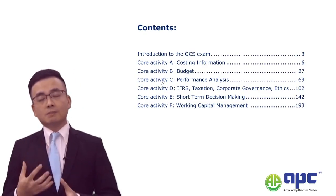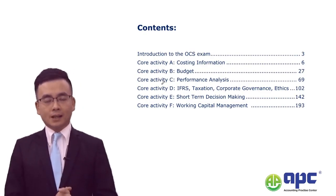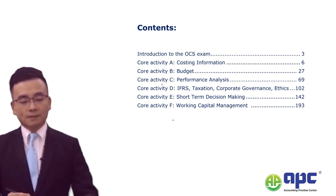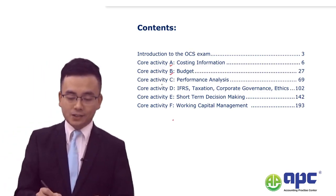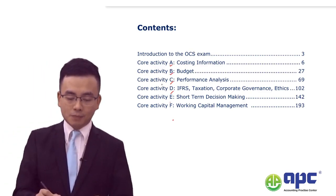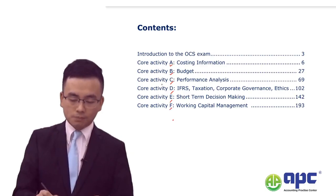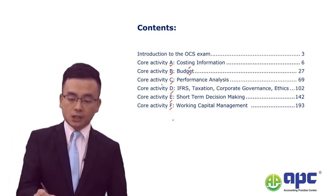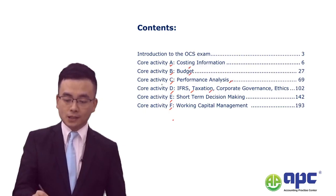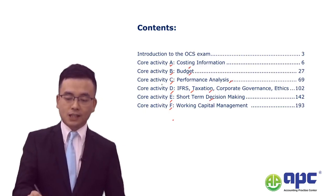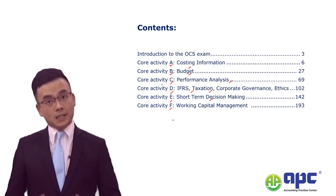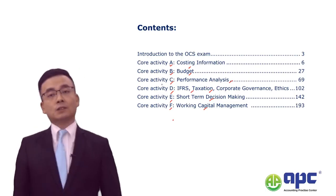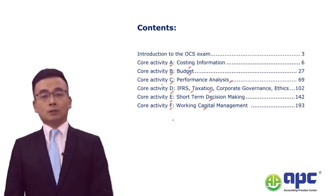According to CIMA's guidance, you need to focus on these core activities from A up to F, covering costing, budgeting, performance analysis, IFRS, tax, short-term decision making — for example relevant cost analysis — and even working capital management.